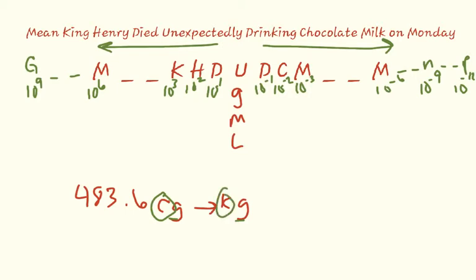So we go up to our mnemonic device at the top and we see where these letters correspond. The C is right here and the K is over here which is where we want to go. So we ask ourselves okay how many places do I have to go from C to K? And we count one two three four five. It takes five spaces to go from centi to kilo. Not only that we go five spaces to the left.